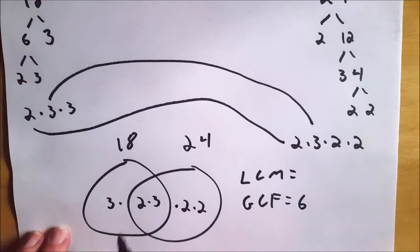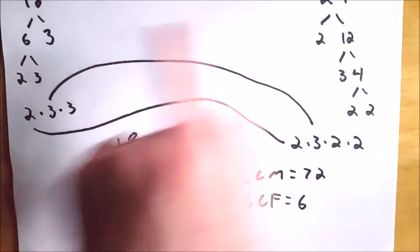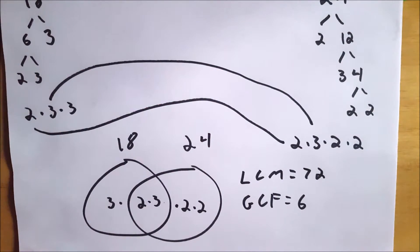To find the least common multiple, all you have to do is multiply all the way across. So that's 3 times 2 times 3 times 2 times 2. So 3 times 2 is 6, times 3 is 18, times 2 is 36, times 2 is 72. So the least common multiple of 24 and 18 is 72. Both of these numbers go into 72, and that's the smallest number that has that property with 24 and 18. 24 and 18 are both factors of 72.